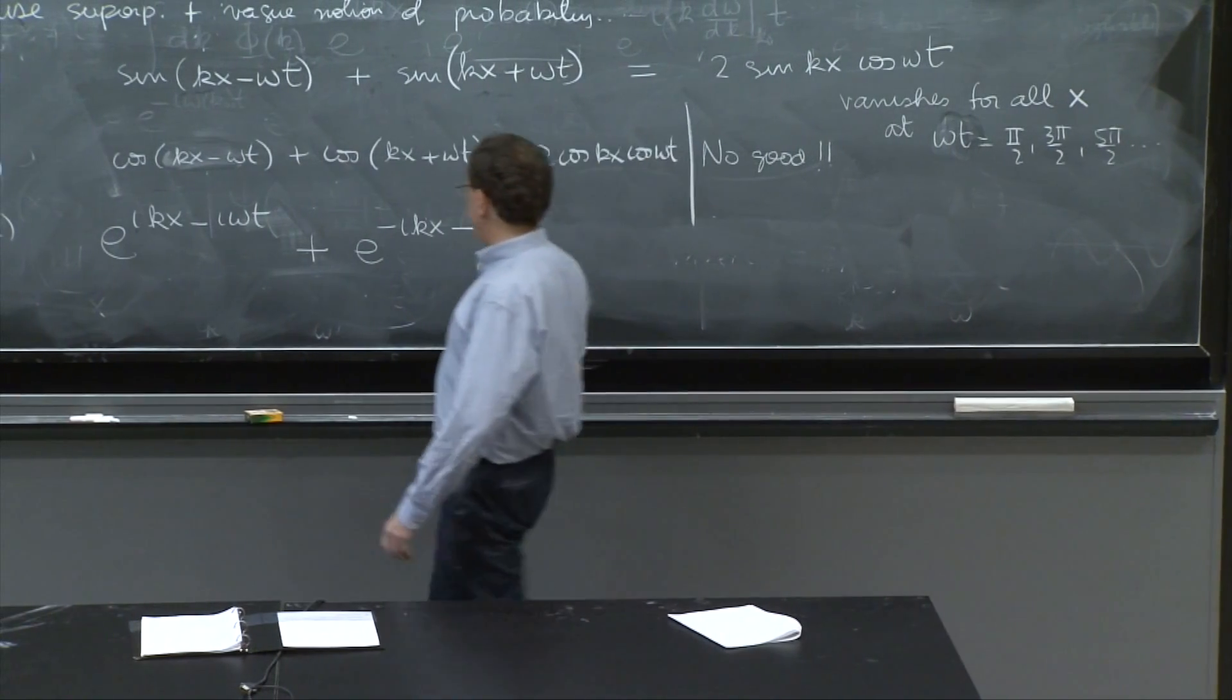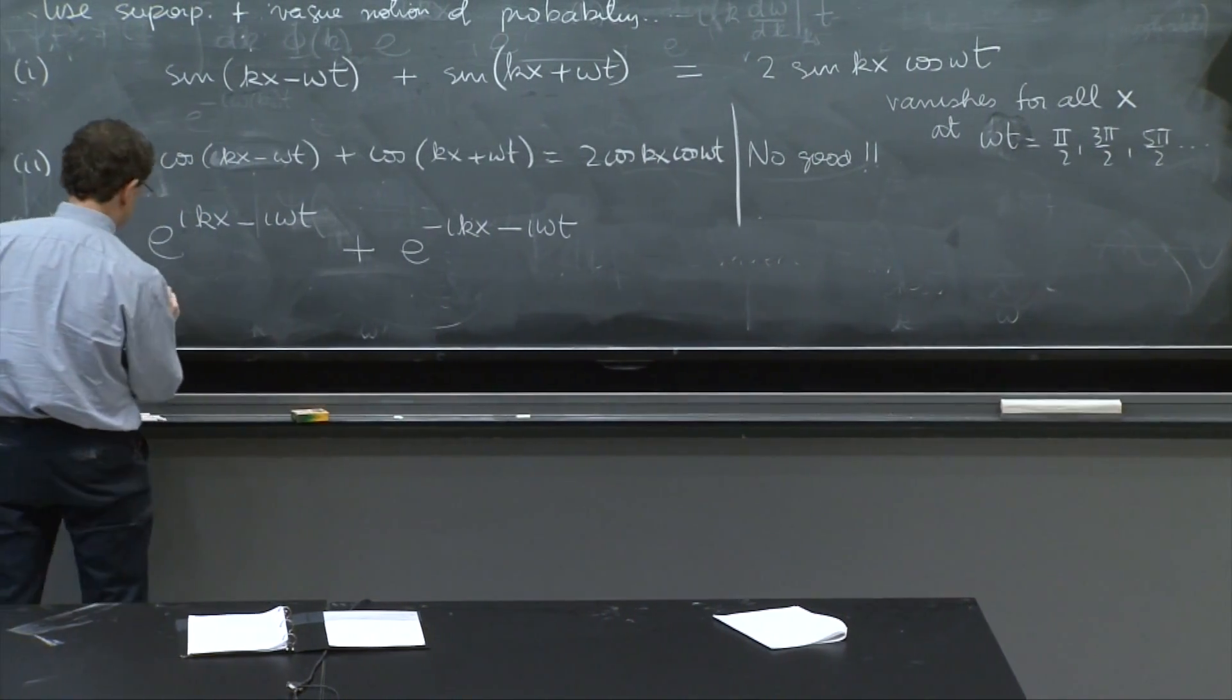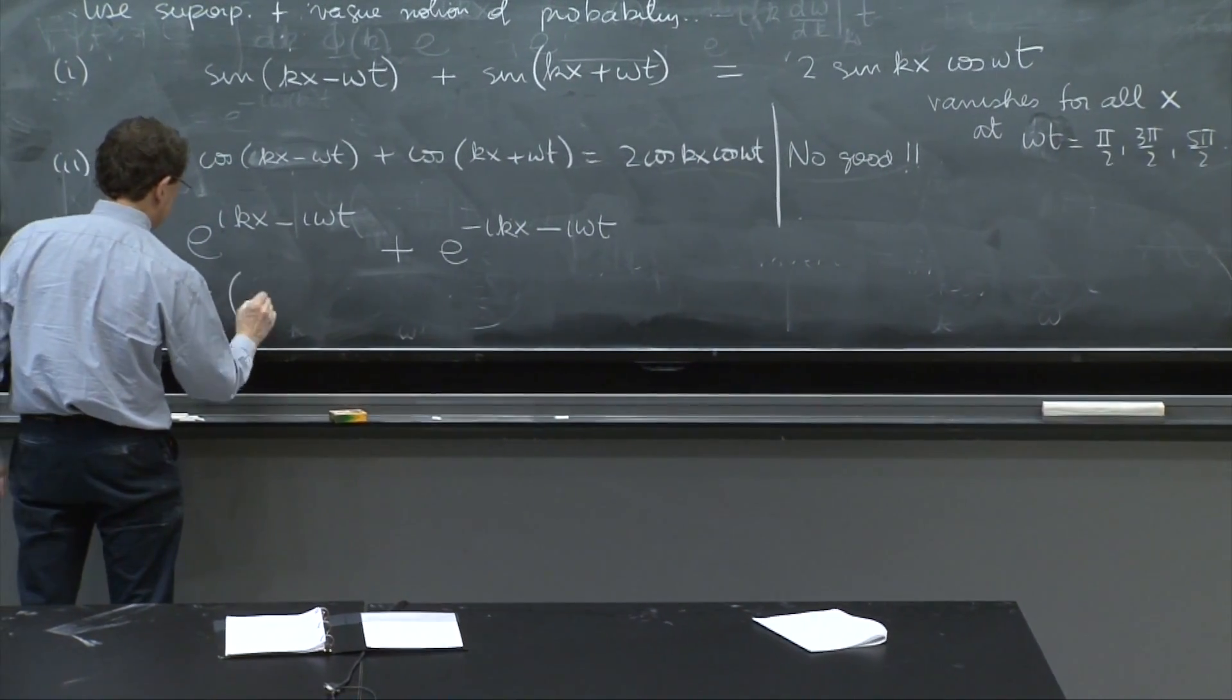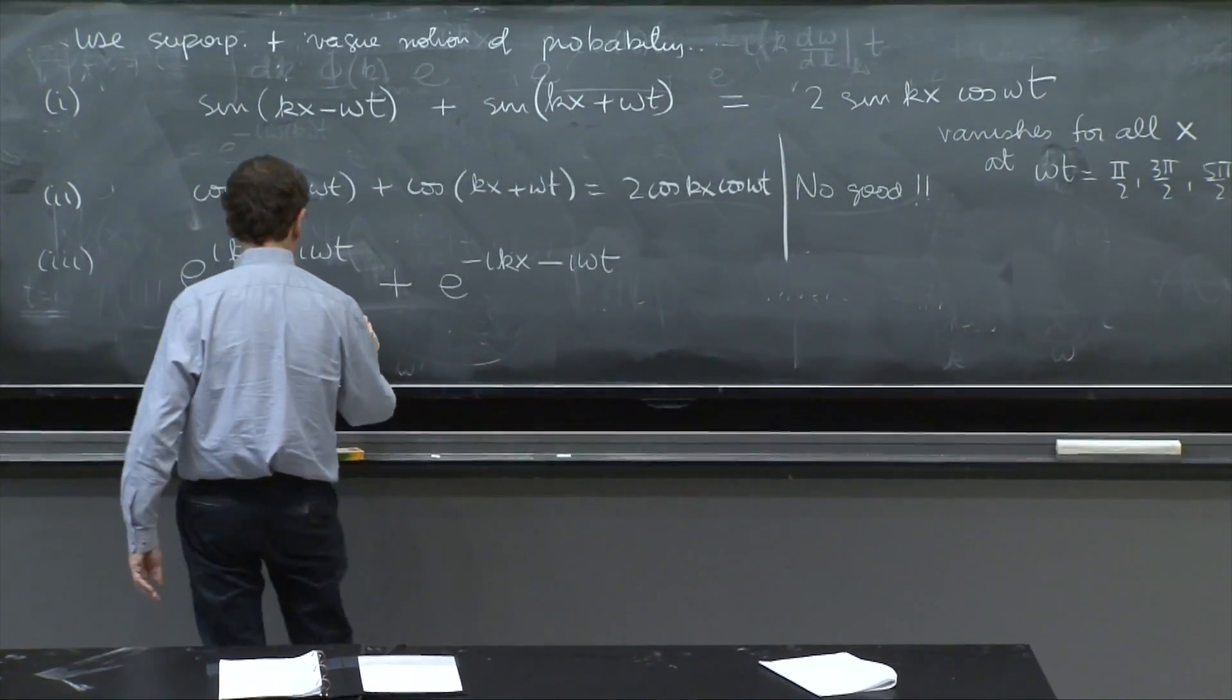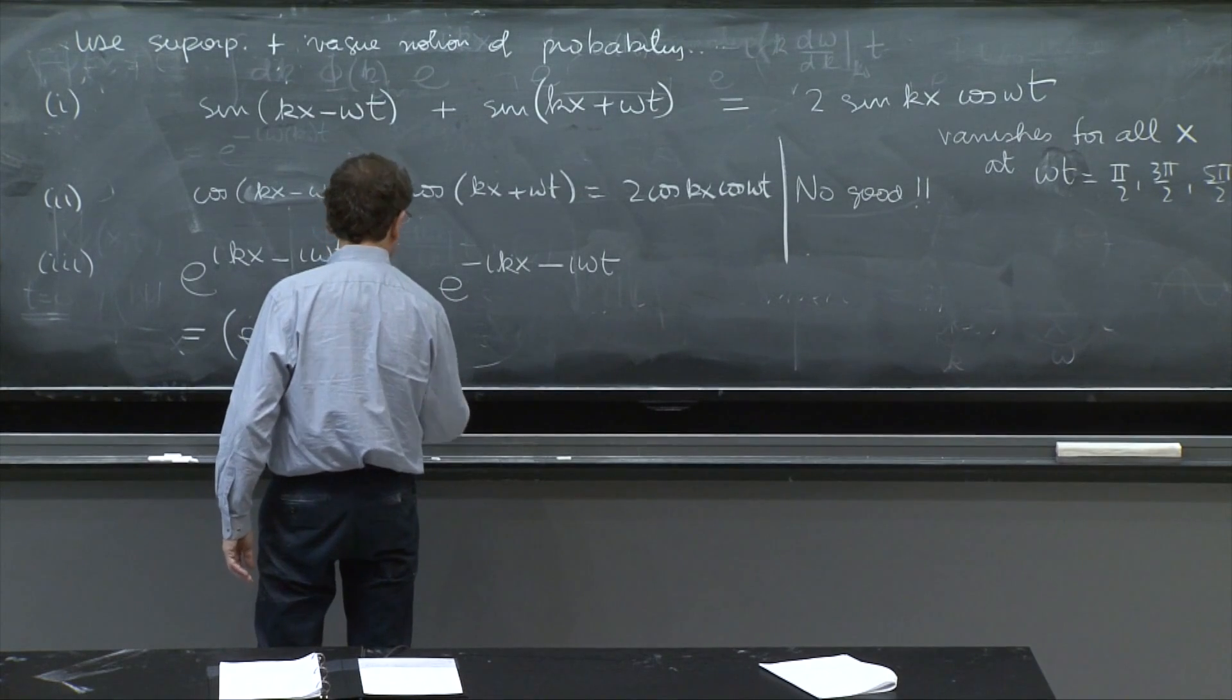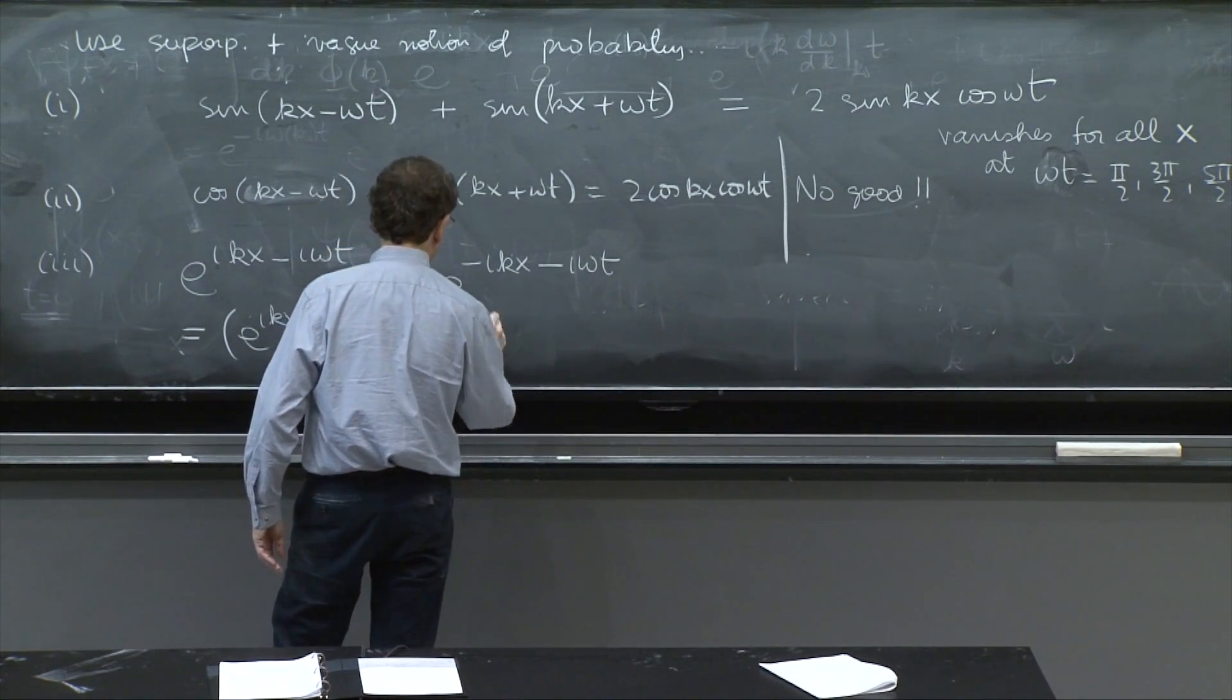In this case, we can factor the time dependence. And you have e to the ikx plus e to the minus ikx, e to the minus i omega t,